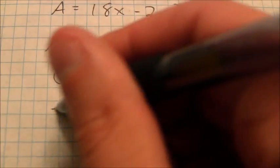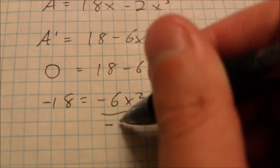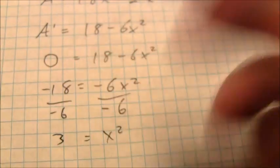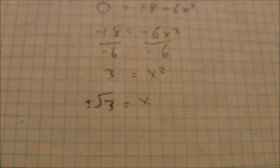And you can see here in this case that will be negative 18 equals negative 6x squared. Divide both sides by negative 6, and I end up finding out that x squared is equal to 3. So x is equal to plus or minus radical 3.